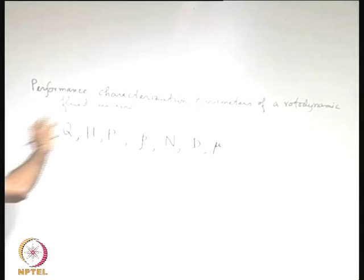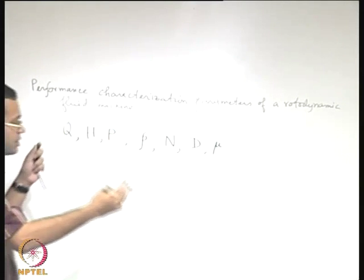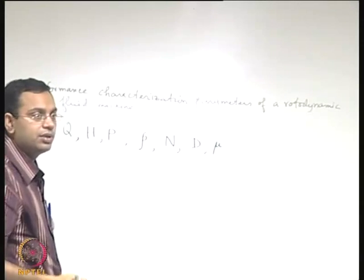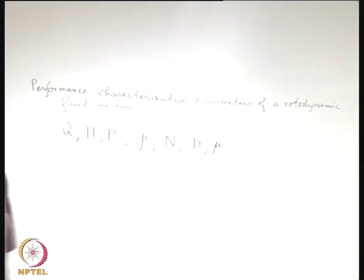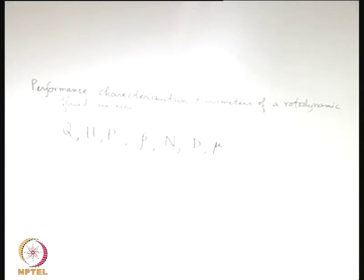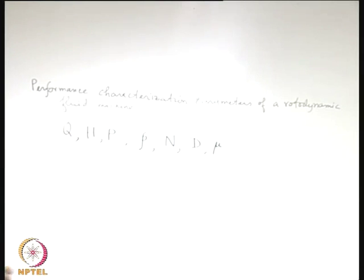So these are the parameters. Some of these are dependent and some are independent variables. Now, how these parameters combine to give certain more meaningful collections of parameters - typically non-dimensional parameters. To do that, we will be using the Buckingham Pi theorem. We therefore have to figure out what are the dimensions of the individual quantities or parameters.